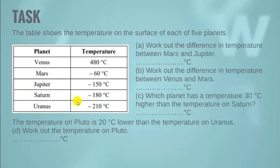Let's move on. Here is a little task for you guys — you need to solve it yourself. You need to see the difference in temperature between Mars and Jupiter, the difference in temperature between Venus and Mars, which planet has a temperature 30 degrees centigrade higher than the temperature on Saturn, and the temperature on Pluto is 20 degrees centigrade lower than the temperature on Uranus — work out the temperature on Pluto. Best of luck with this.